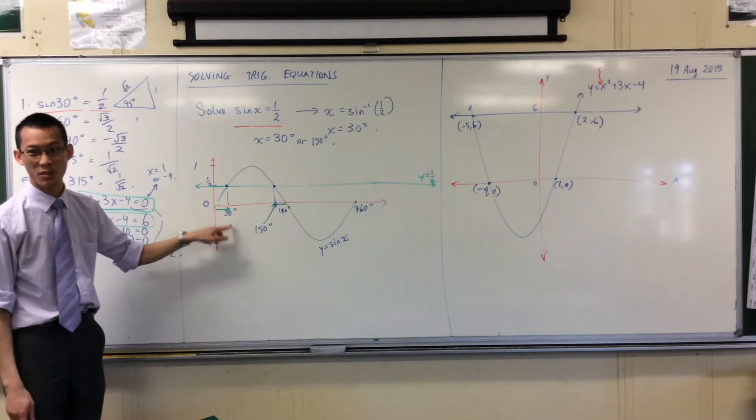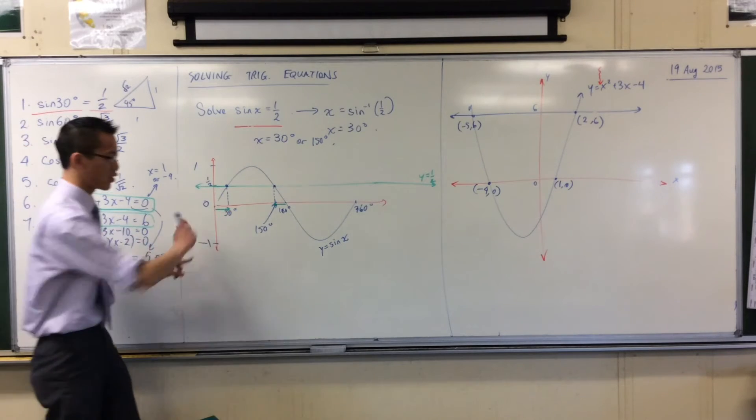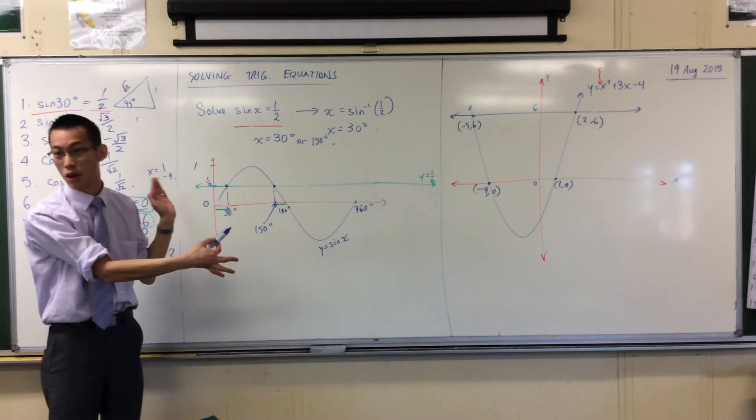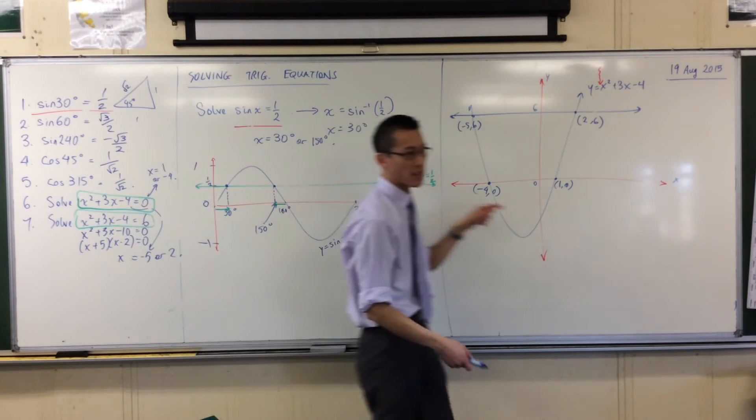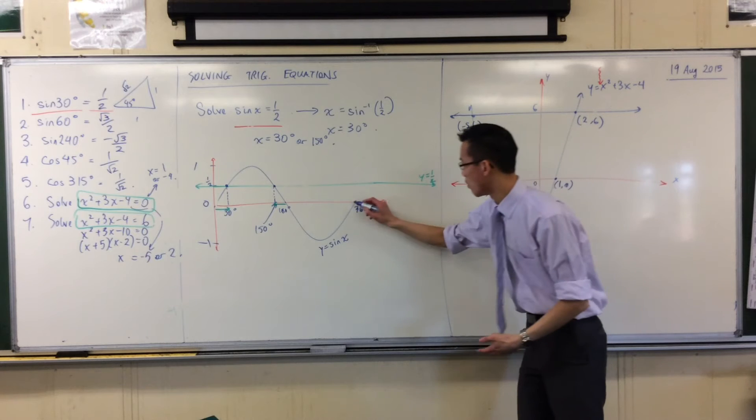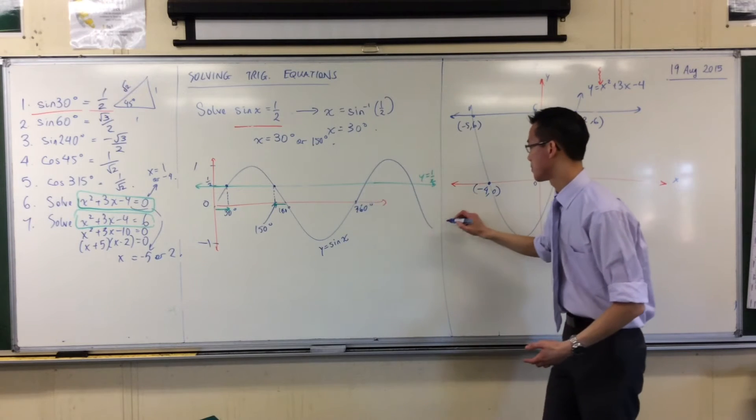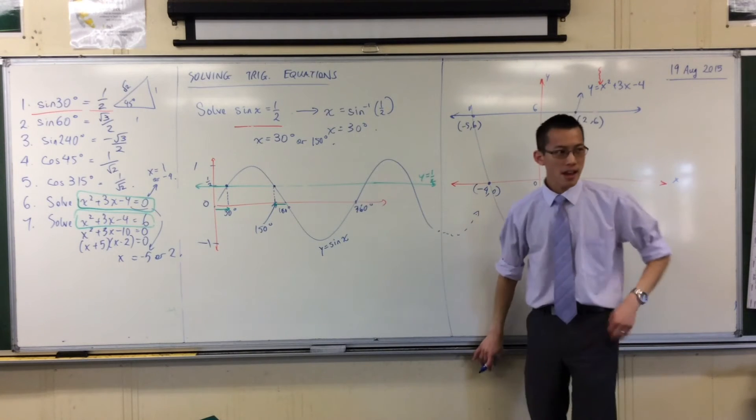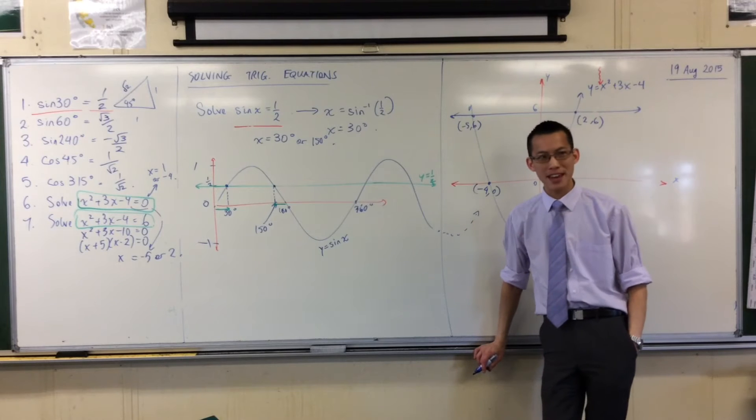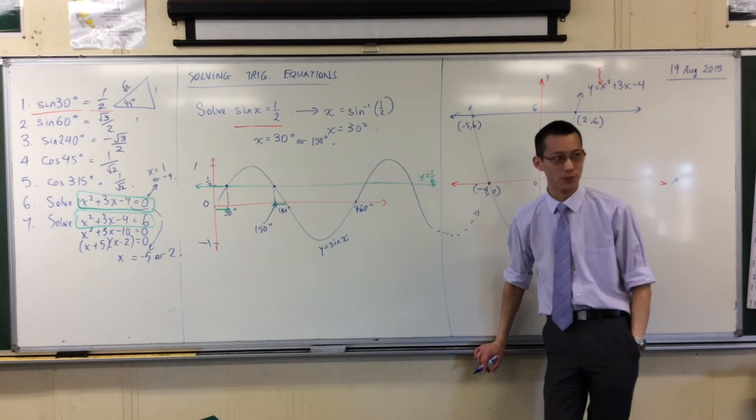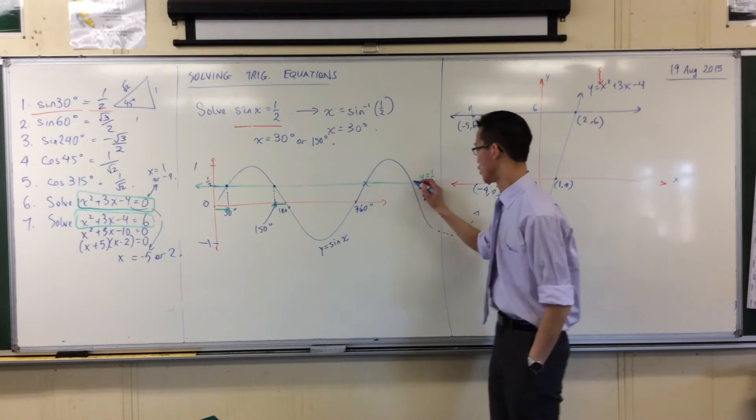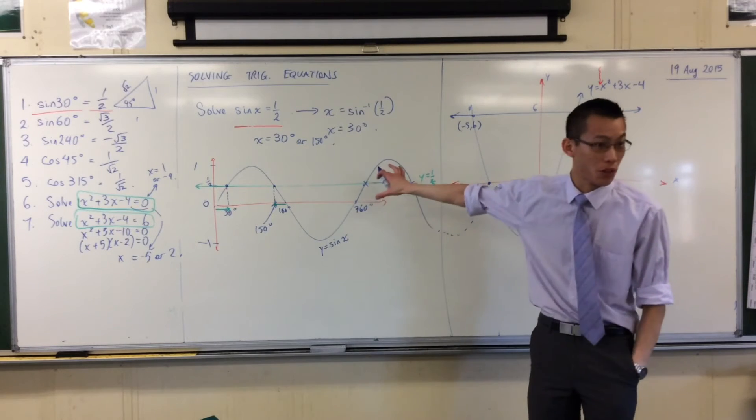Remember we said this graph, it actually keeps going. We've only drawn a portion of it. So over here on the right-hand side, I could draw it some more, like this. Now, once I've drawn it further, you see, hold on a second, there's not two solutions. There's four solutions, at least on the board that I've drawn.